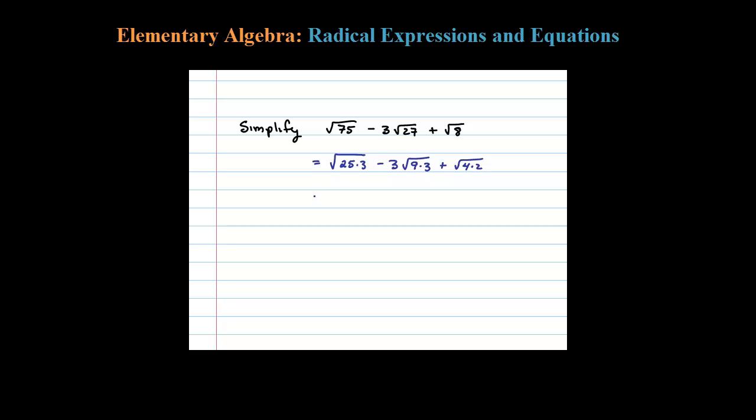That allows us to simplify a little easier here. Square root of 25 is 5 square root of 3—see that 3 is still inside the square root—minus 3 times square root of 9 is 3 square root of 3, plus square root of 4 is 2 square root of 2.